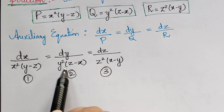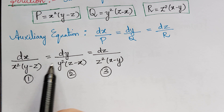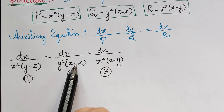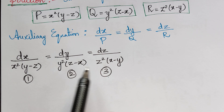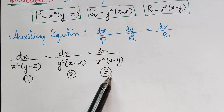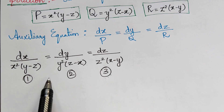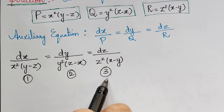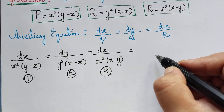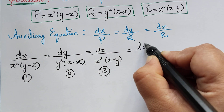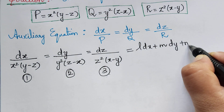If you check, you can see that the variables in the denominator are x, y and z. When we compare ratios 1 and 2, we have only dx and dy. Similarly, pairs 1 & 3 and 2 & 3 result in the same case. For that reason, we cannot use the method of grouping, so we have to use the method of multipliers. To find the multipliers, we form a new ratio: L dx plus M dy plus N dz.